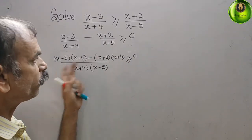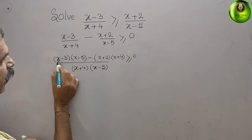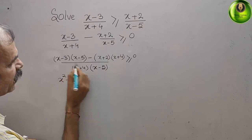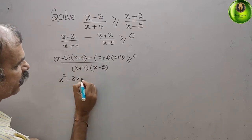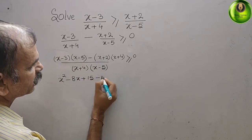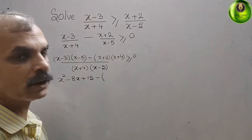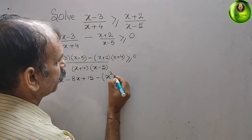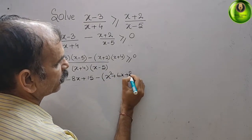Now solve for the numerator. What you will get: x squared minus 8x plus 15, minus (x plus 2) into (x plus 4) which gives x squared plus 6x plus 8.